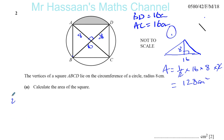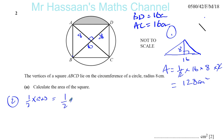Another way is to use the formula: the area of a kite is a half times the product of the diagonals. A square is kind of like a kite because the diagonals intersect at right angles. So you can say it's a half times 16 times 16, which also gives you 128.